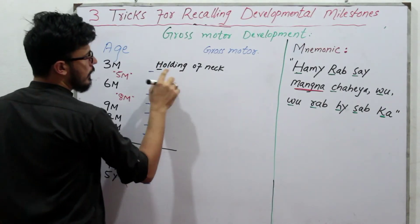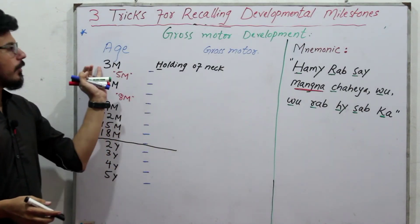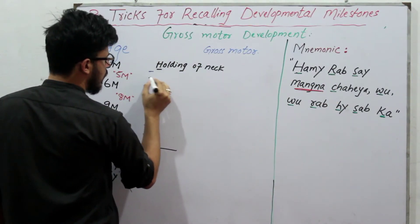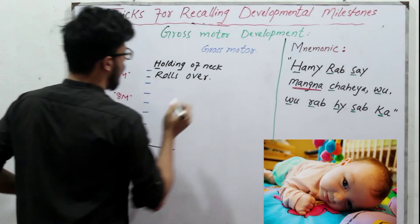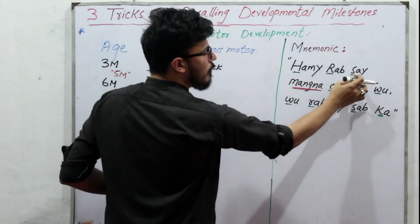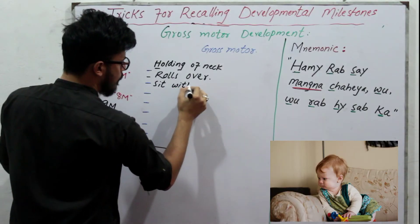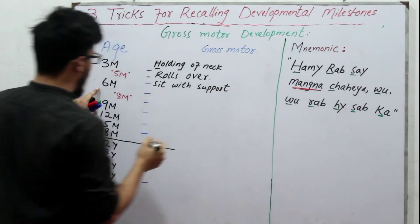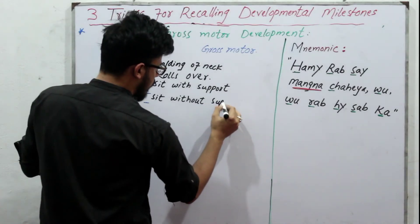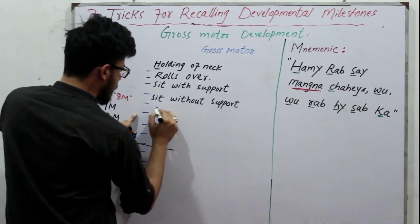After H there is R, so at five months the baby rolls over. At six months there is S — the baby is able to sit with support. S is considered twice: at six months, sit with support, and at eight months, sit without support.